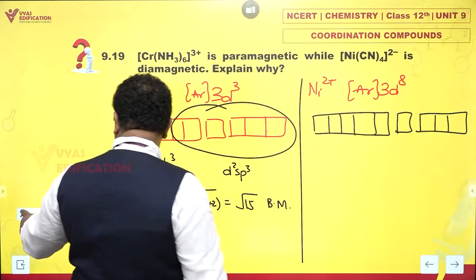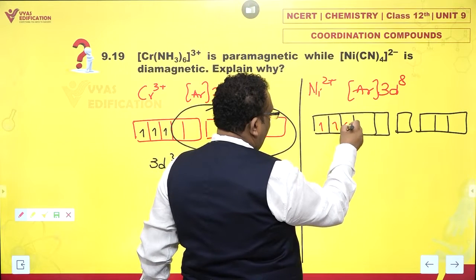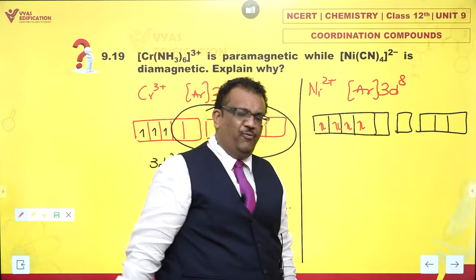So if you have d⁸ configuration, that means 1, 2, 3, 4, 5, 6, 7, 8. It will be pushed in and forced to pair up.